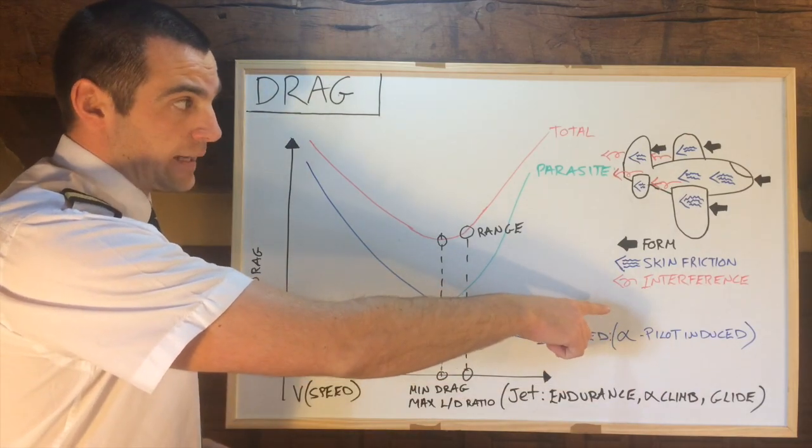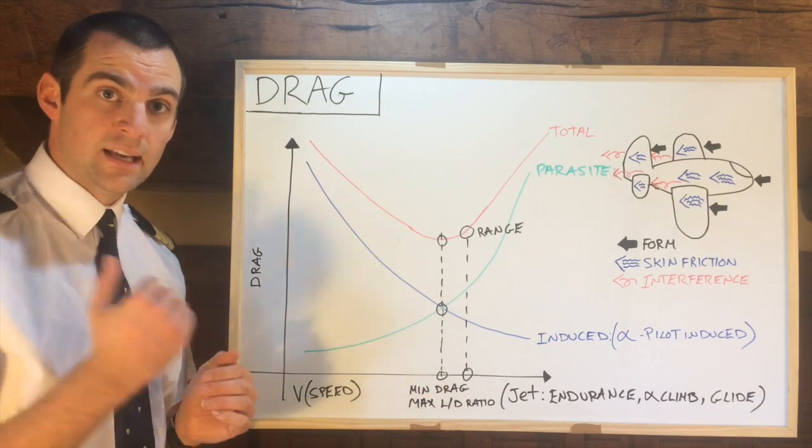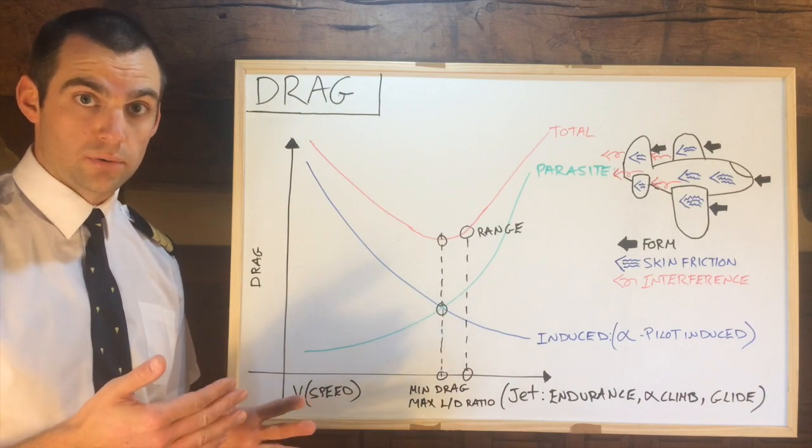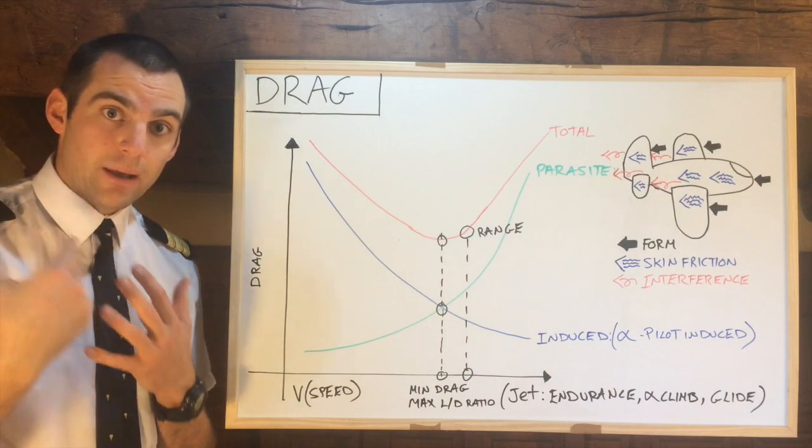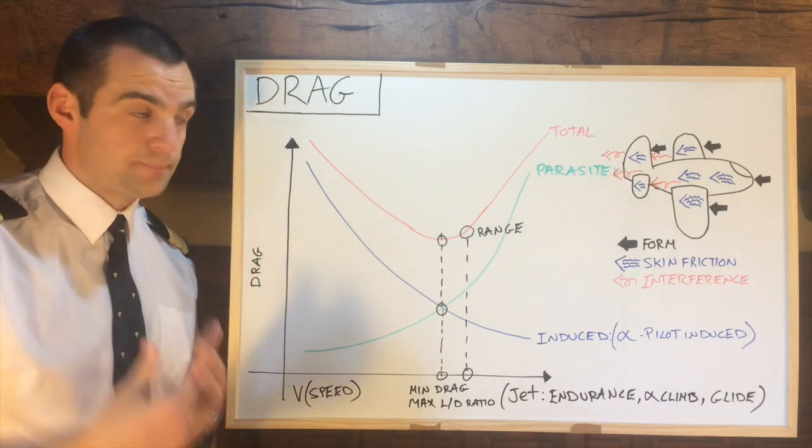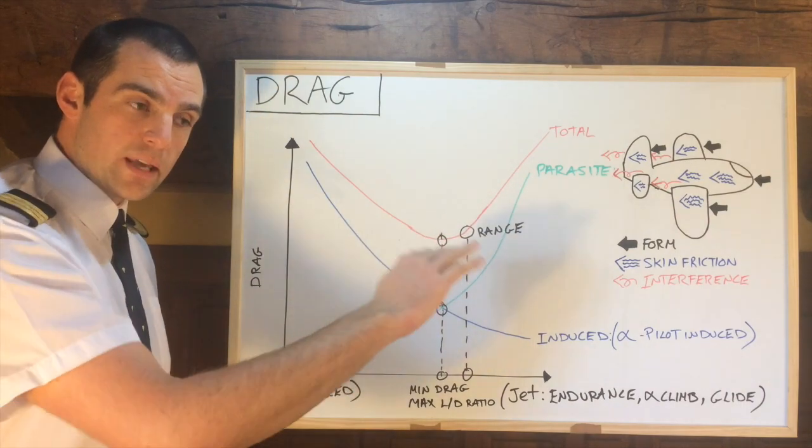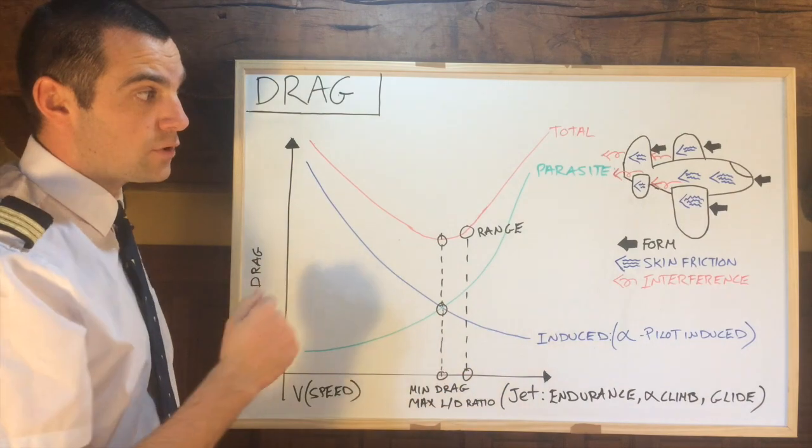Now the last one is interference drag. Interference drag comes from any sort of interference the aircraft creates as it's flying through the air, such as wingtip vortices for example. So as lift is generated, there is a sort of spiral of air coming off the back which generates a lot of drag for aircraft. It can also happen as air separates from the wing as it heads towards the trailing edge of the wing. It will separate and create a turbulent boundary. That creates a form of interference drag.